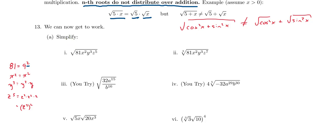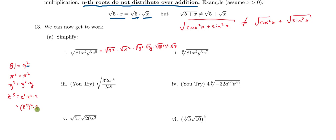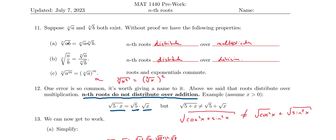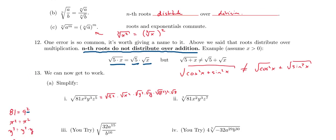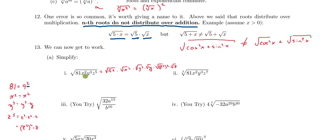Now I'm ready to simplify this root by pulling out perfect squares. I can say this equals the square root of 9 squared, times the square root of x squared, times the square root of y squared, times the square root of y, times the square root of z squared squared, and the square root of z. I distributed the square root using the product property, which says nth roots distribute over multiplication.